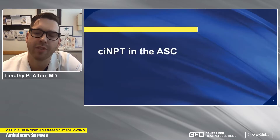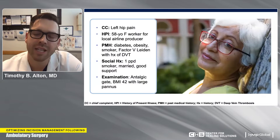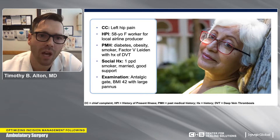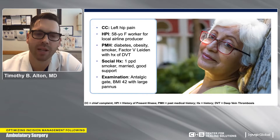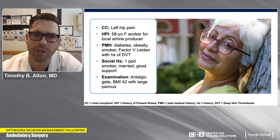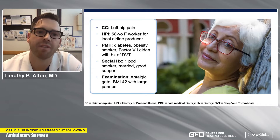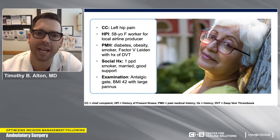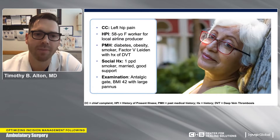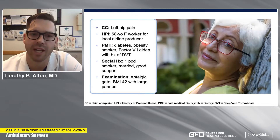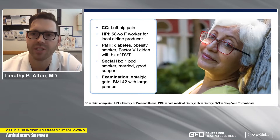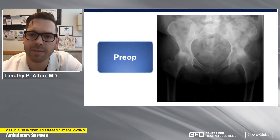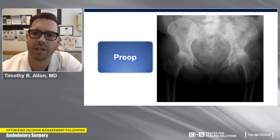This case is of a 58-year-old female who worked for a local airline producer, had a host of medical problems, and was having a difficult time with her hip. She's diabetic, obese, smokes, has a history of factor V Leiden — a clotting disorder — and had an unprovoked DVT previously. Her body mass index was 42, and upon examination she had a large pannus. This is her x-ray demonstrating severe osteoarthritis to the left hip — bone-on-bone, end-of-the-road arthritis.